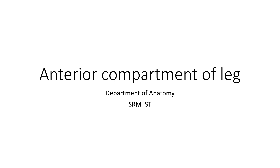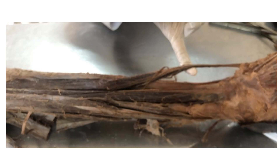In this video we are going to see the anterior compartment of leg spotters. Number one, identify the pinned or tied structure. This is the first structure present in the anterior compartment of leg — this is your tibialis anterior. The action of tibialis anterior is it is an inverter of the foot.